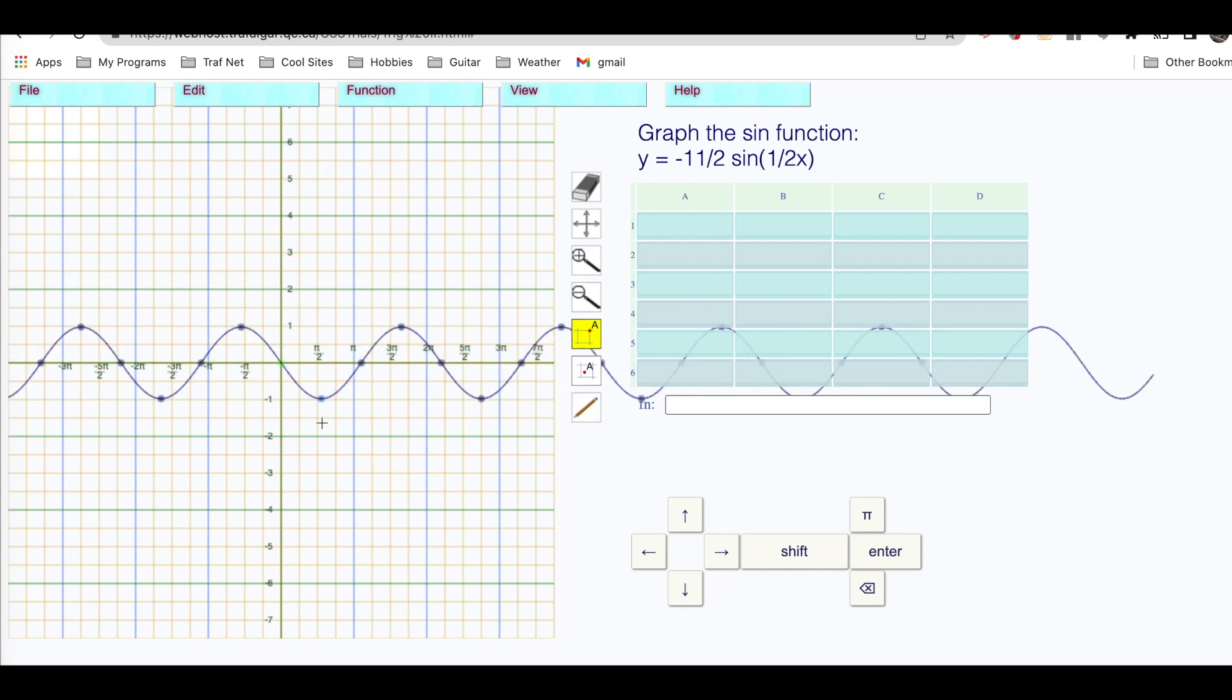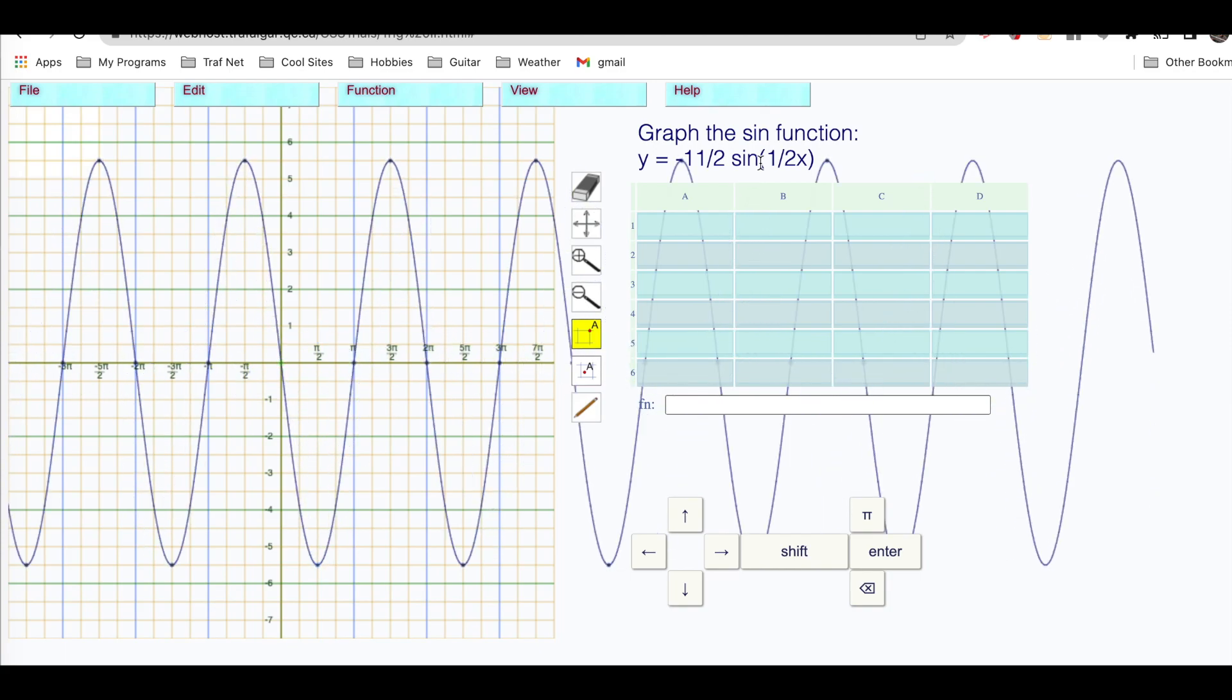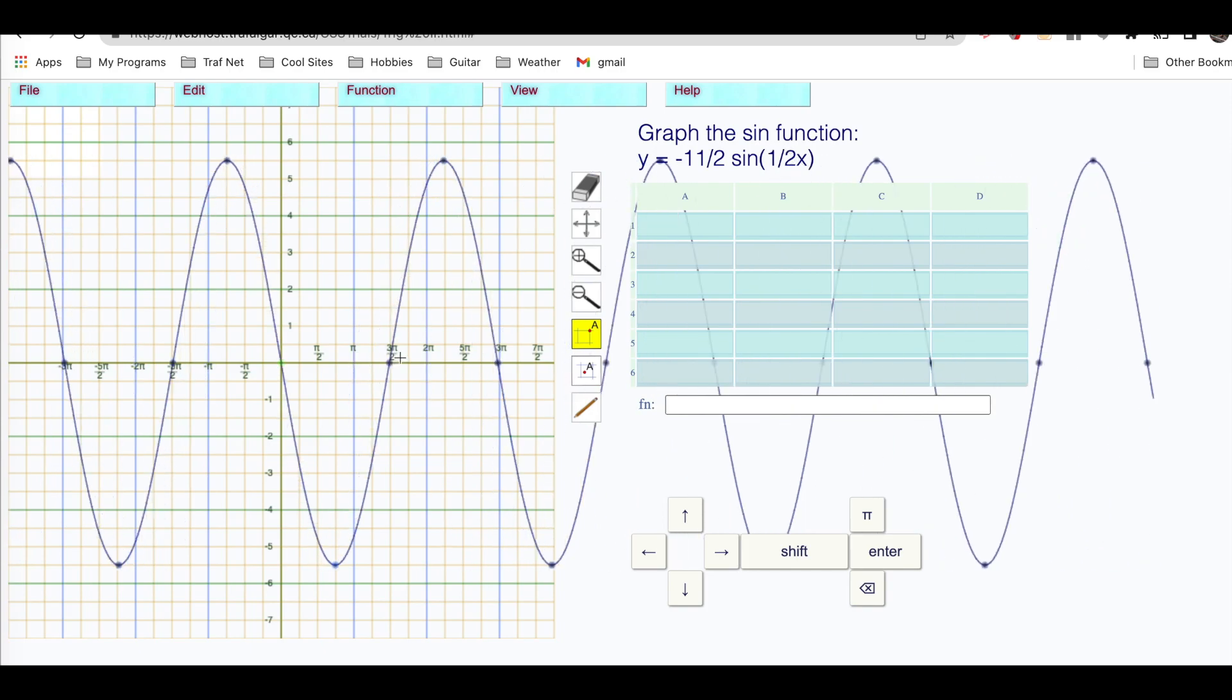Take the reciprocal of that multiplied by pi, two pi. One pi becomes two pi.